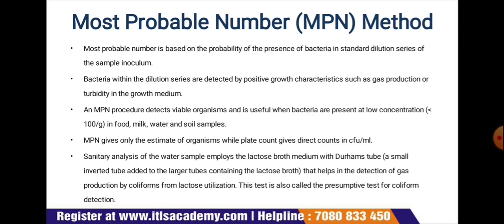The Most Probable Number (MPN) method is based on the probability of the presence of bacteria in a standard dilution series of the sample inoculum. Dilutions of food samples are prepared as in the standard plate count method. Bacteria within the dilution series are detected by positive growth characteristics such as gas production or turbidity in the growth medium. MPN detects viable organisms and is useful when bacteria are present at low concentrations — less than 100 per gram — in food, milk, water, and soil samples. MPN gives only an estimate, while plate count gives direct counts in CFU/ml.